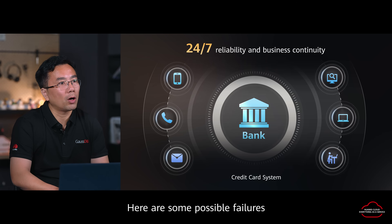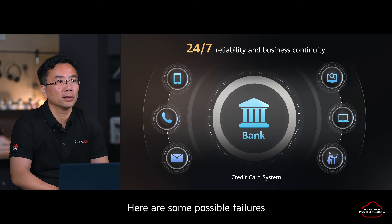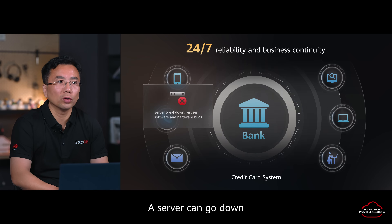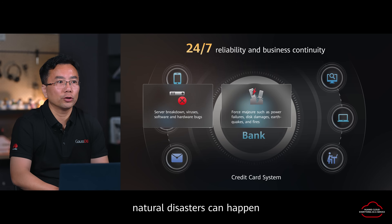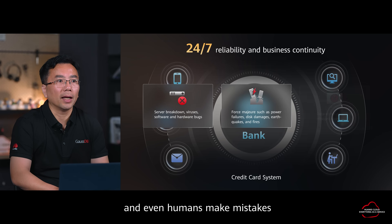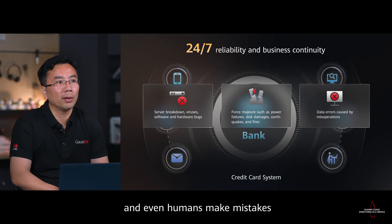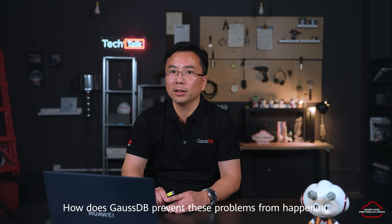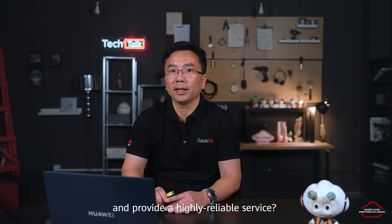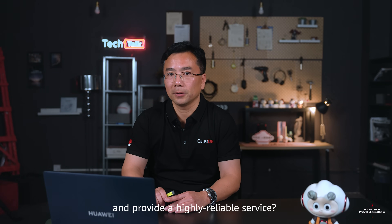Here are some possible failures: a server can go down, power can fail, natural disasters can happen, and even humans make mistakes. How does GaussDB prevent these problems from happening and provide a highly reliable service?